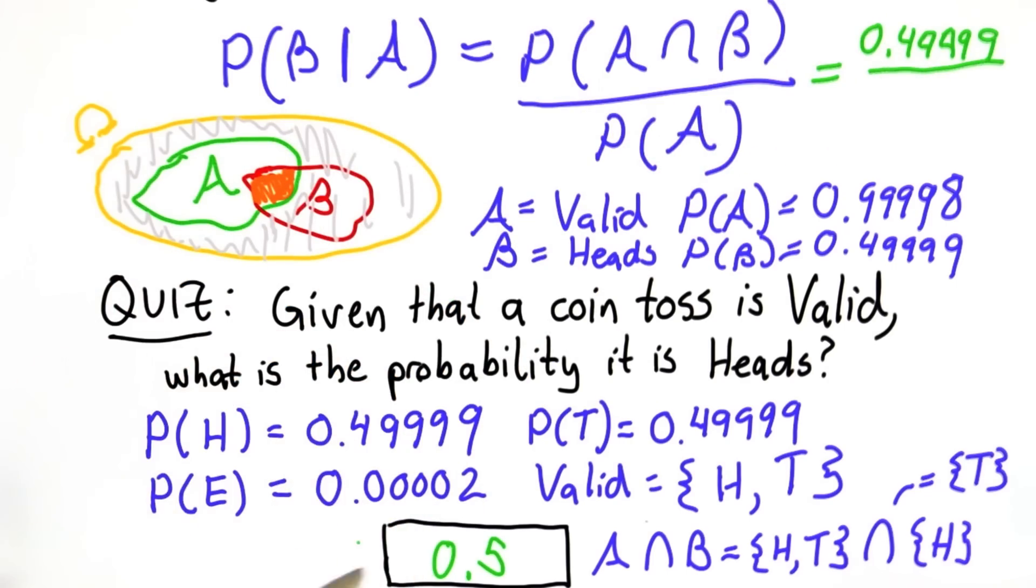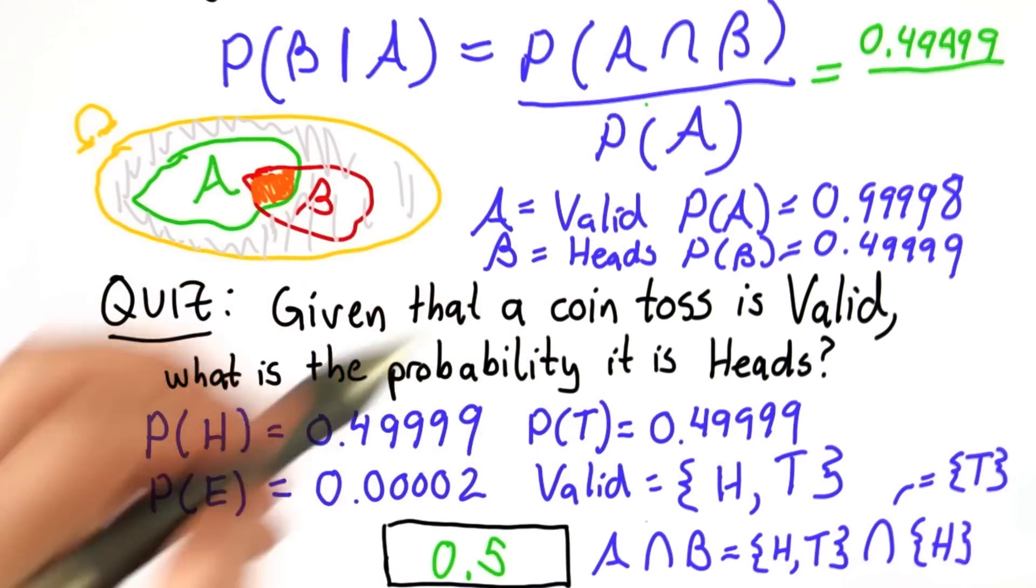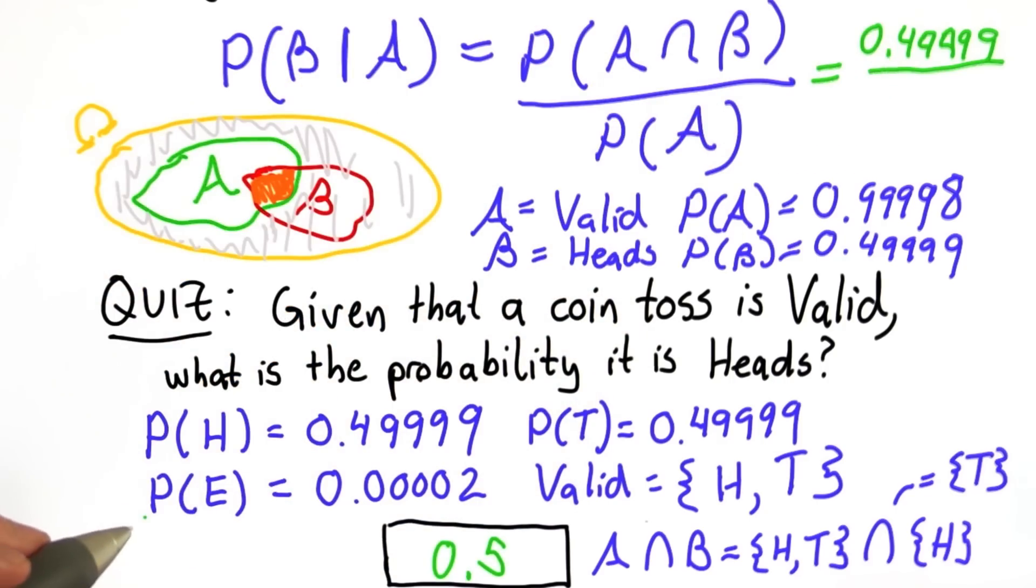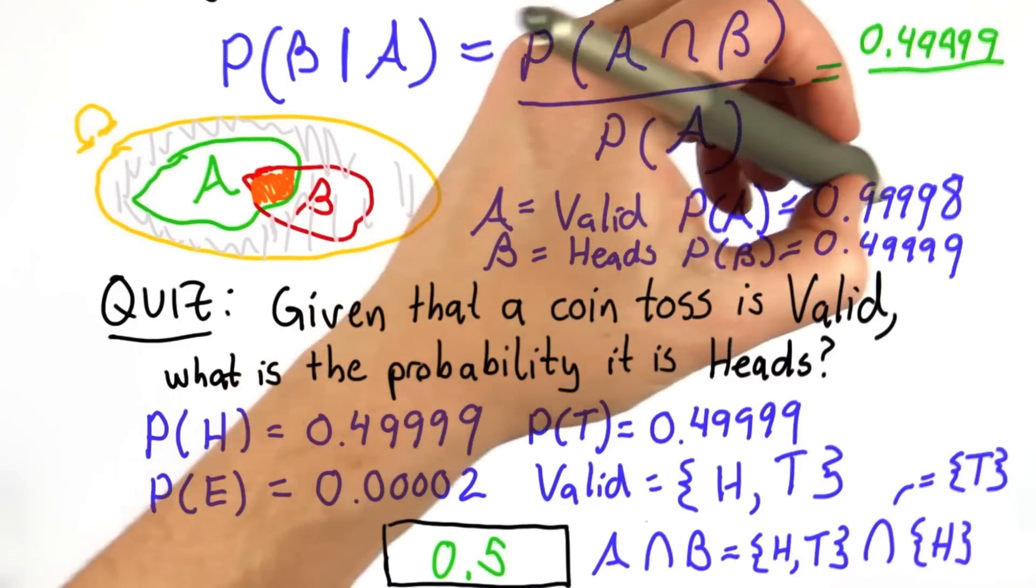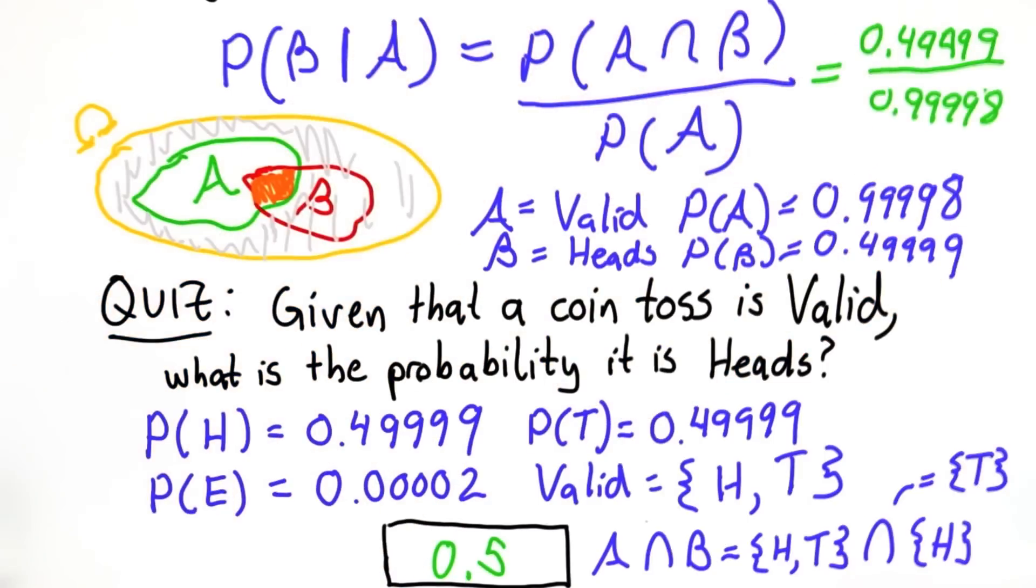And we're dividing that by the probability of A, which is the valid event, which is 0.999998. And we get 0.5. I should note that this is not the case for real coin tosses.